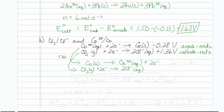It doesn't look like we have to do much work to balance this one, because I have two electrons going in and two electrons coming out. So N, which equals the moles of electrons, equals two. The net reaction is chlorine gas plus cobalt solid going to two Cl minus aqueous plus cobalt two plus.